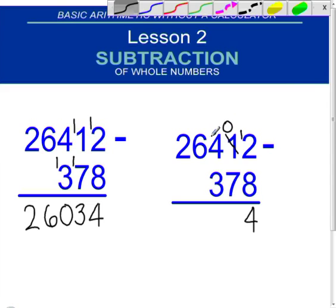You cross the four out and turn it into a three, because you've borrowed one of its units. That one gets put in front of the zero, and it turns the zero into a ten. So, ten minus seven equals three. Continuing to the left, three minus three equals zero. And six minus nothing is six. And two minus nothing is two.